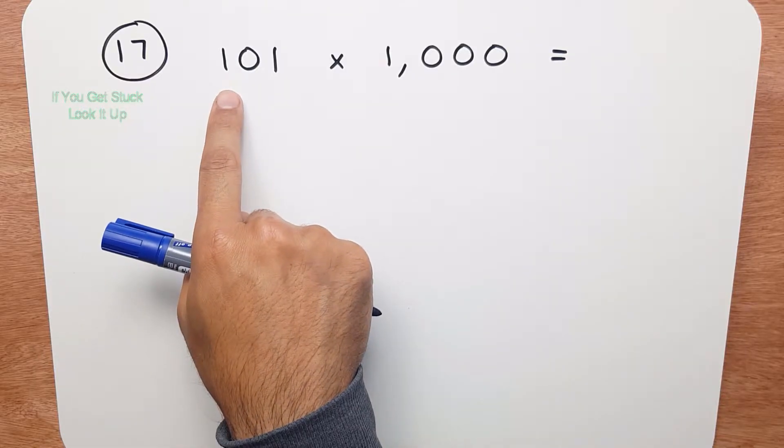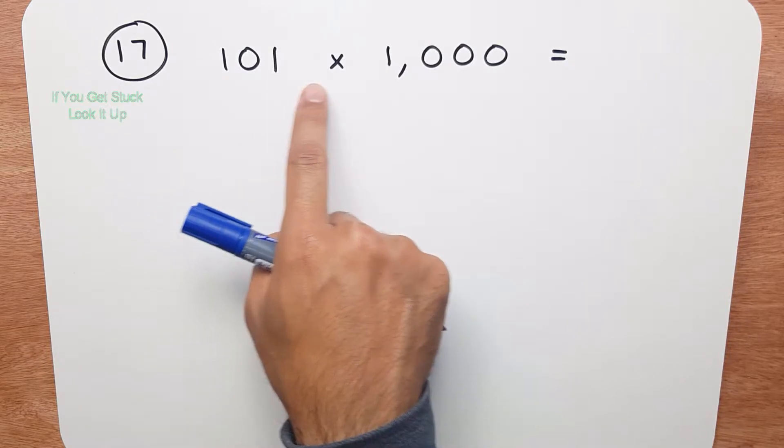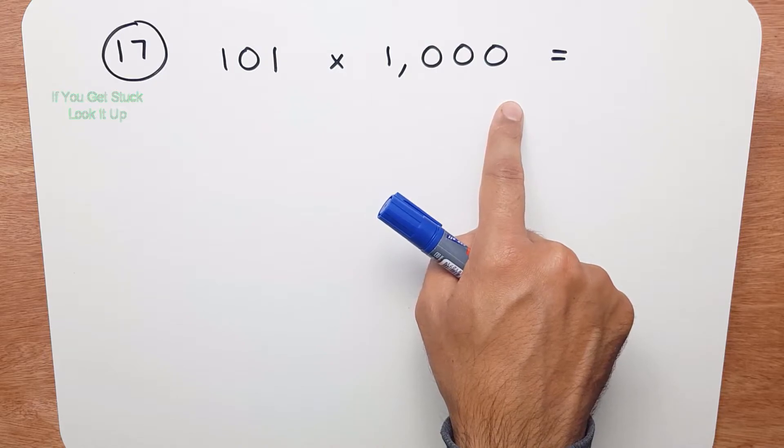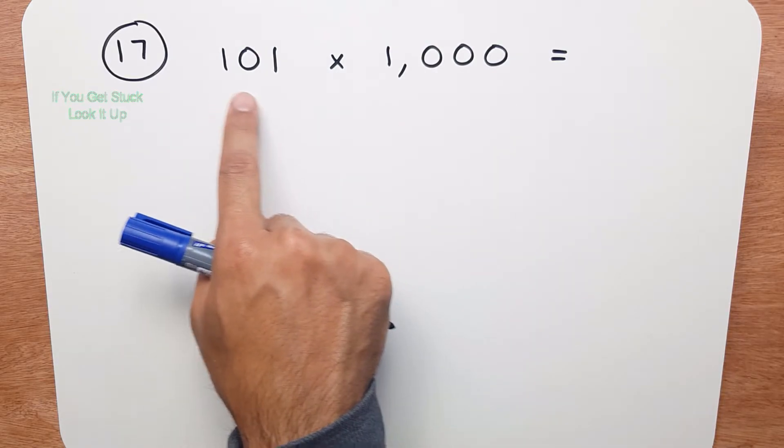In this question we're given 101 times 1000. Now the way to do this question,